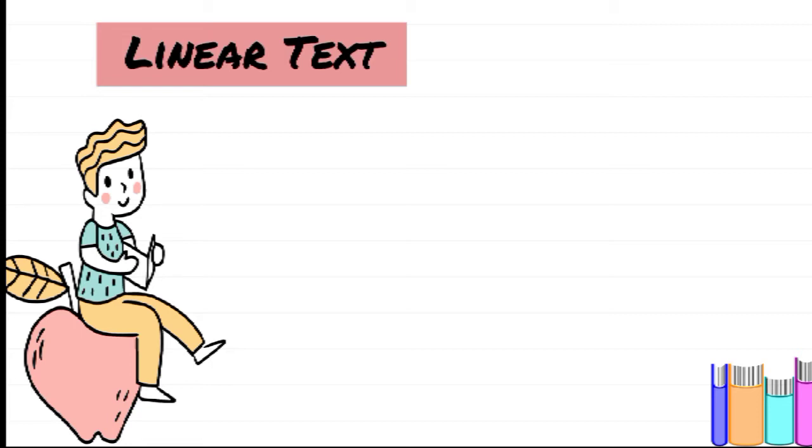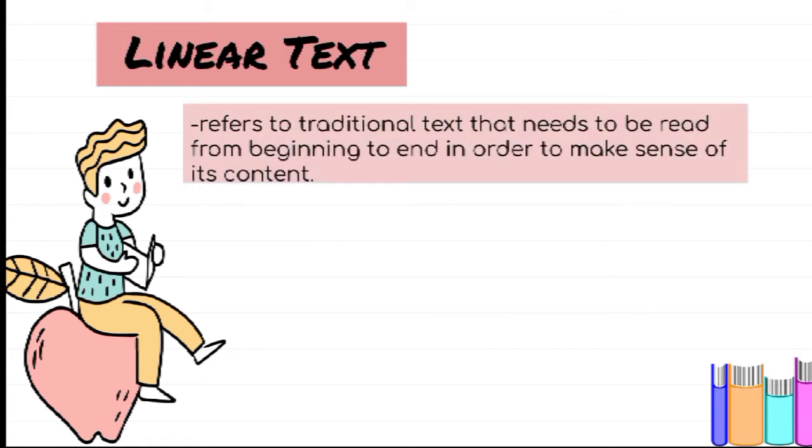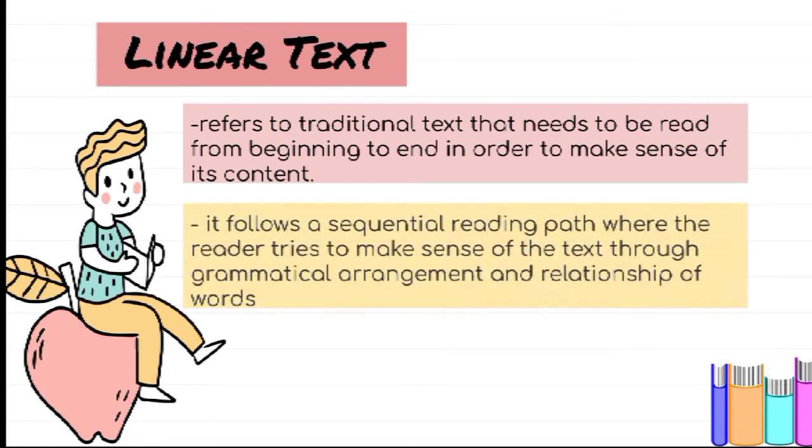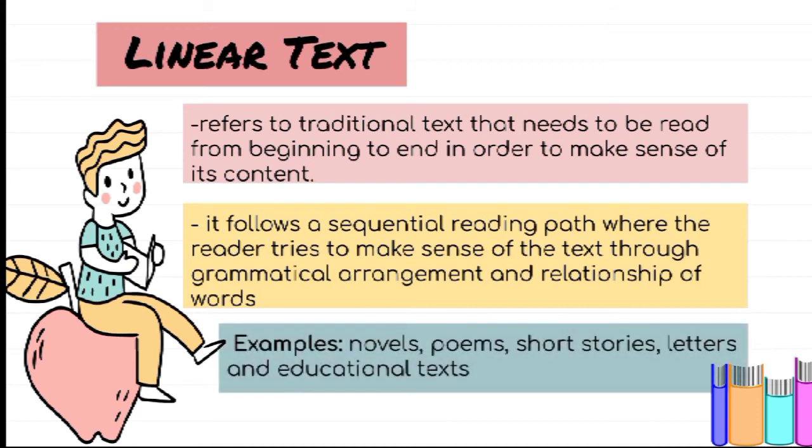Let's have the first one, Linear text. It refers to the traditional text that needs to be read from beginning to end in order to make sense of its contents. It follows a sequential reading path where the reader tries to make sense of the text through grammatical arrangement and relationship of words. The common examples of this type include novels, poems, short stories, letters, and educational texts.